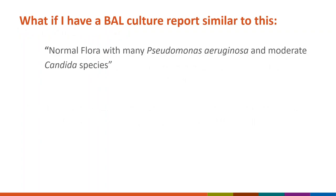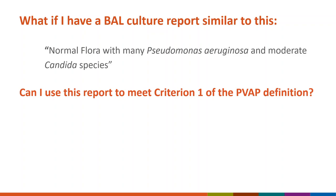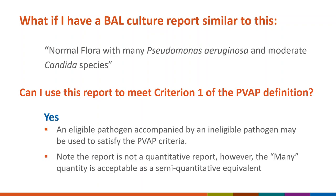What if a BAL culture report shows normal flora with many Pseudomonas aeruginosa and moderate Candida species? Can this be used to meet criterion one of the PVAP definition? The answer is yes. As long as an eligible pathogen — in this case Pseudomonas aeruginosa — is identified, even if accompanied by an excluded organism such as Candida, the eligible pathogen may be used to satisfy the PVAP criteria. The result for Pseudomonas aeruginosa was reported with a semi-quantitative result of many, which is an acceptable equivalent for criterion one.